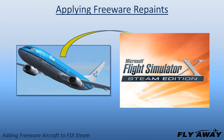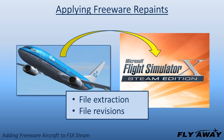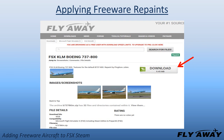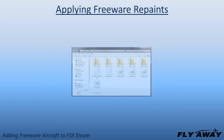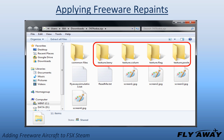Freeware repaints can be applied to stock FSX STEAM aircraft and to already installed freeware aircraft. Adding repainted aircraft requires the same file extraction procedures described, plus revisions of aircraft configuration files. Select and download a repaint package, then extract all the new texture folders to the specific FSX STEAM aircraft for your repaints. Some developers add one texture and some add several — this developer made four texture sets for this 747.